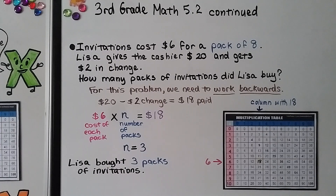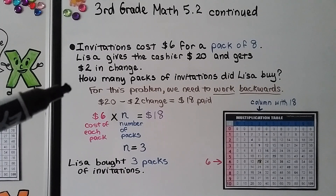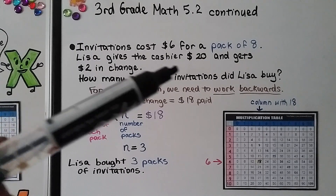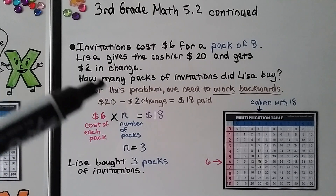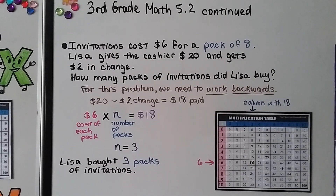For a problem like this, you'll want to work backwards — start at the bottom and subtract first (20 minus 2) to find how much she paid. Then figure out what the variable stands for to solve the problem.